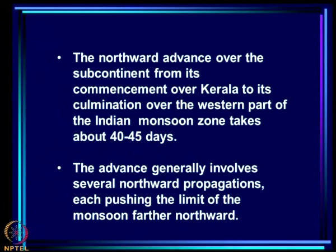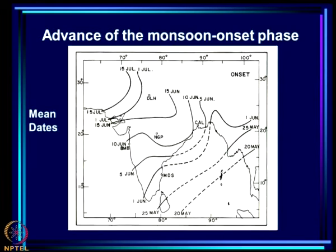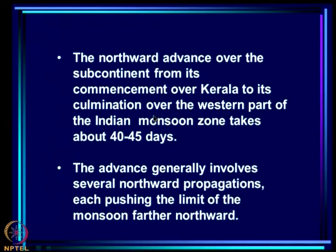The northward advance over the subcontinent from its commencement over Kerala to its culmination over the western part of the Indian monsoon zone takes about 40 to 45 days - this is 1st of June and this is 15th of July. The advance generally involves several northward propagations, each pushing the limit of the monsoon further northward.